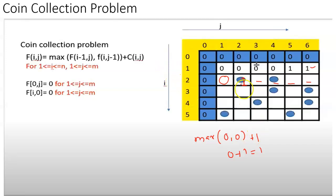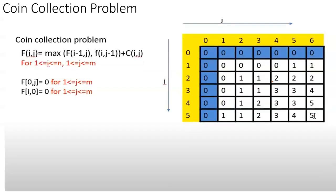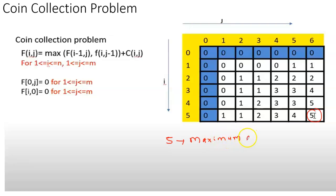We have to calculate the cost for all cells by applying the recurrence relation. Once we calculate the cost of all cells, at last we get the final value in the lower right corner, which is five. That five indicates the maximum number of coins collected. So the last value in the last row, last column indicates how many coins we collected at maximum — which is five coins.